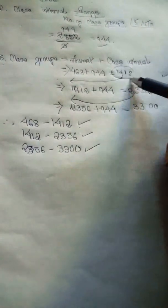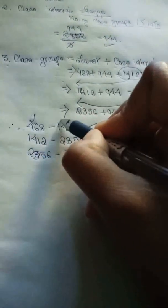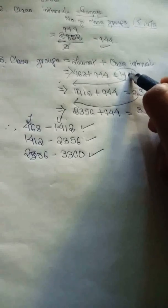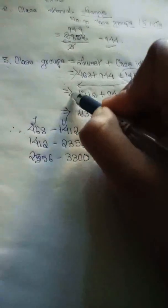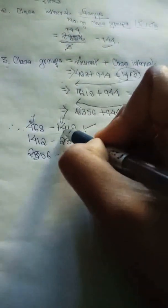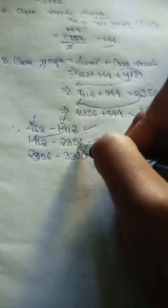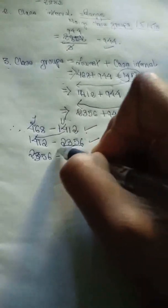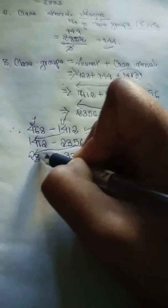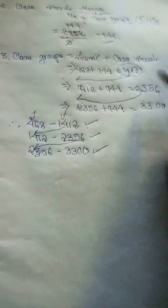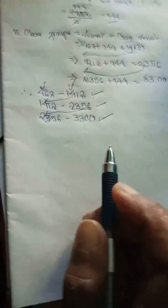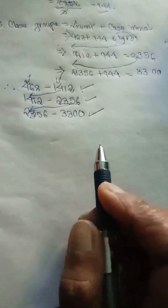So to remember the method: whatever number you get, add the class interval to get the next boundary. The upper limit of the first class group becomes the lower limit of the second, and so on. This is how we derive all three class groups. Now we will prepare a small table.